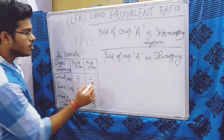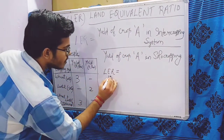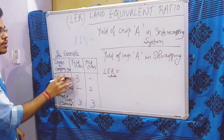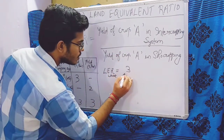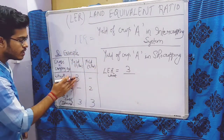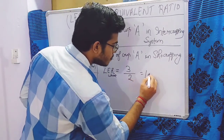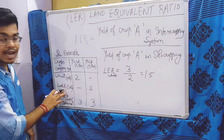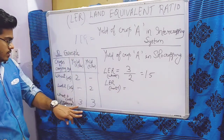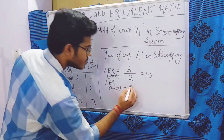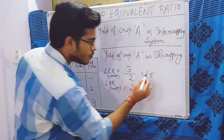Now how we calculate the LER of the system — LER equals to the yield of wheat in intercropping system, which is 3, divided by the yield of wheat as a sole crop. Suppose we take that as 2, so we get a value of 1.5. Similarly we calculate the LER of lentil — in intercropping we get 3, and as a sole crop it gets 2, so this is also 1.5.